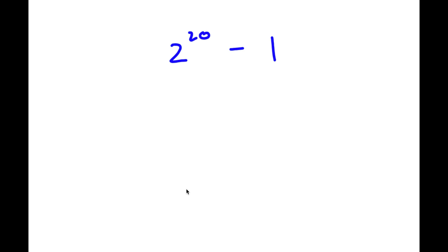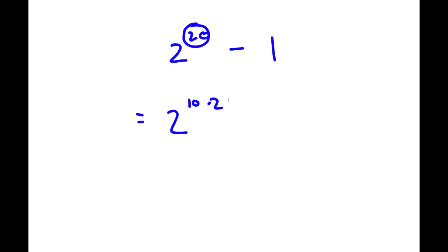Alright, so in this problem I have 2 to the power of 20 minus 1. To solve this, I'm going to first start by rewriting 2 to the power of 20 as 2 to the power of 10 times 2. So now I have 2 to the power of 10 times 2, minus 1.